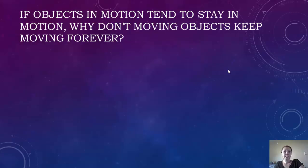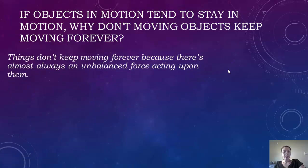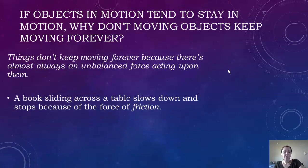So if objects in motion tend to stay in motion, why don't moving objects keep moving forever? Things don't keep moving forever because there's almost always an unbalanced force acting upon them. Whether it's friction or gravity, there's just always something there to make that force unbalanced. For an example, when you're sliding a book across a table, it's going to slow down and stop. That's caused by the force of friction.